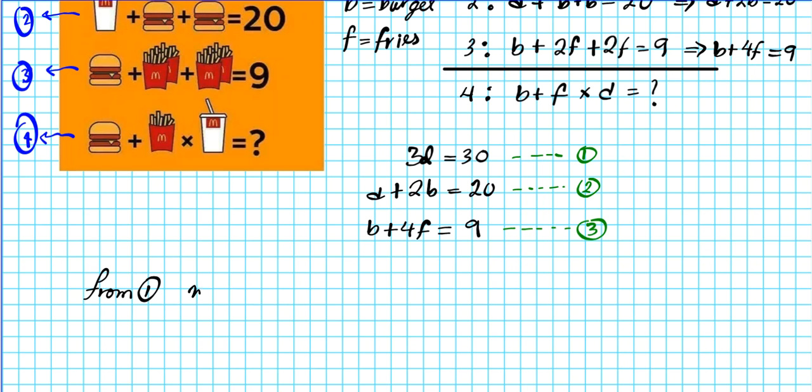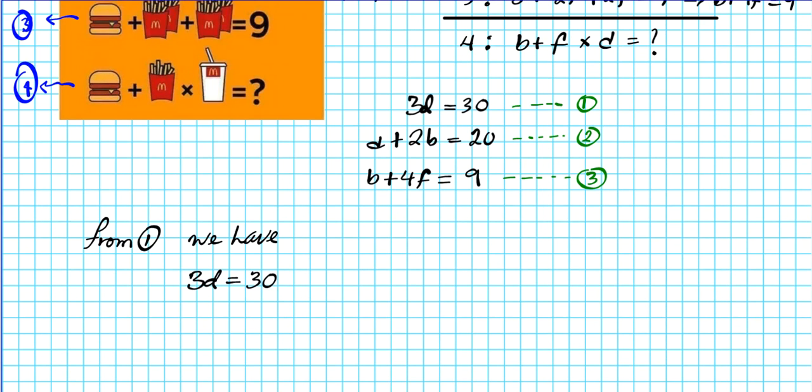From equation one, we have 3D equals 30. So if you triple something and get 30, what is that thing that you tripled? It's 10. But let's solve it algebraically, so we divide both sides by 3, and then our result is going to be D equals 10. So we have one unknown determined now.